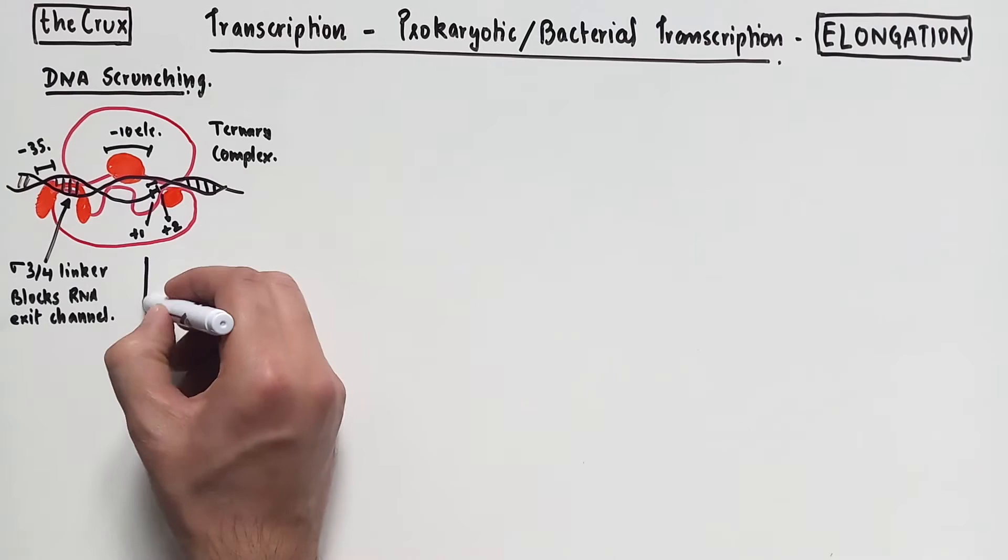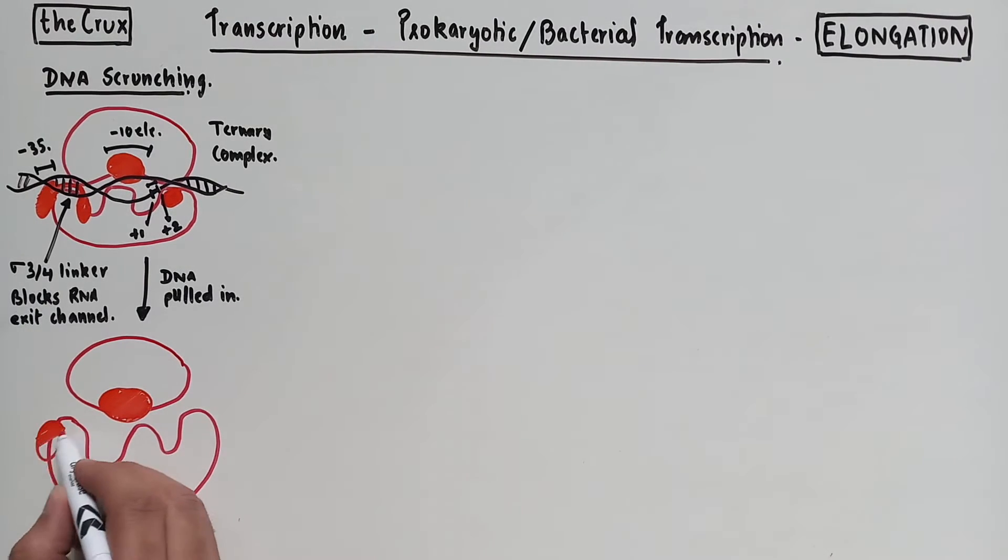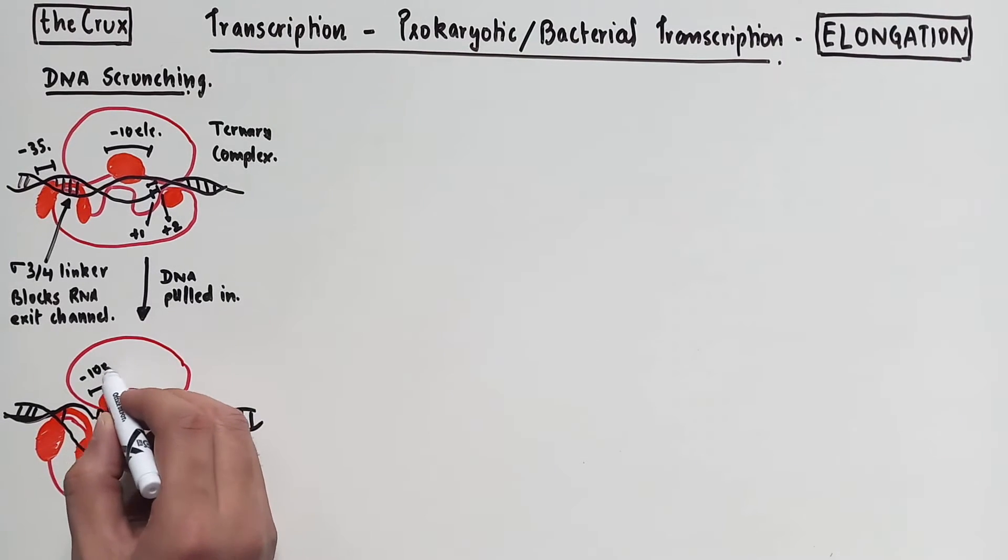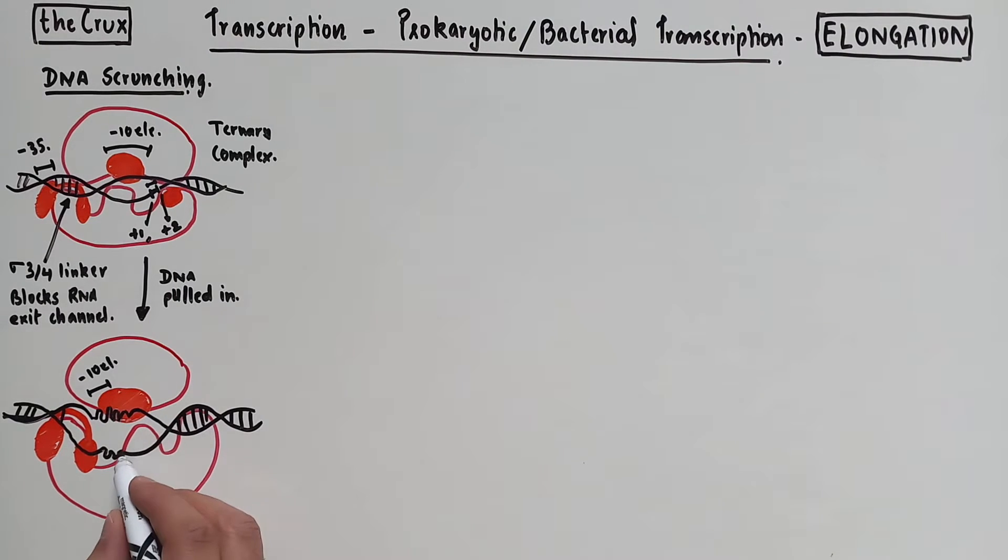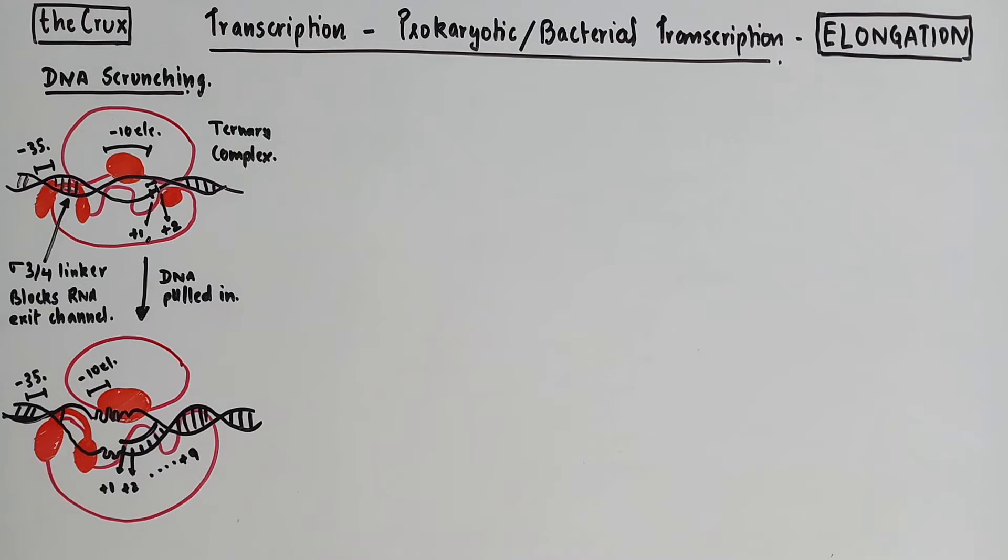When DNA scrunching happens, the DNA is pulled in such that the extra DNA actually accumulates in the activity center. So instead of the usual 13 base pair transcription bubble, you have about 25 bases. In this configuration, the negative 10 element is pushed back at the end of the transcription bubble and the plus 1 moves inwards as a consequence. The polymerase synthesizes the RNA as well, starting at the plus 1 site. Because all the DNA is pulled inwards from only one side and accumulates at the center, the negative 35 element binding with domain 4 does not change.